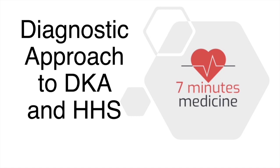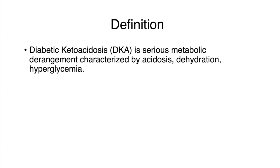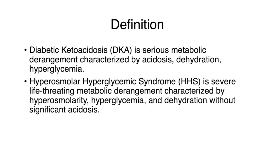Diabetic ketoacidosis is a serious metabolic derangement characterized by acidosis, dehydration, and hyperglycemia. HHS is almost the same derangement except it has more hyperosmolarity and not much acidosis.